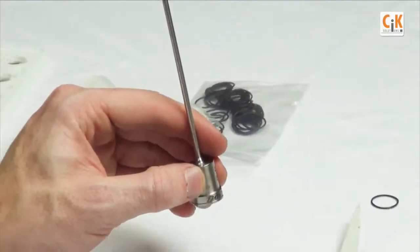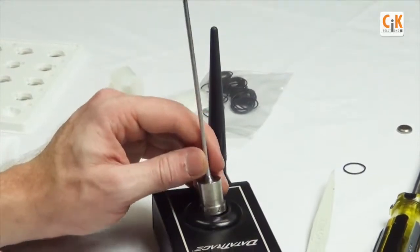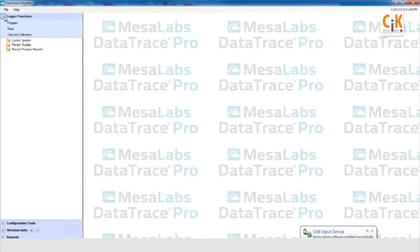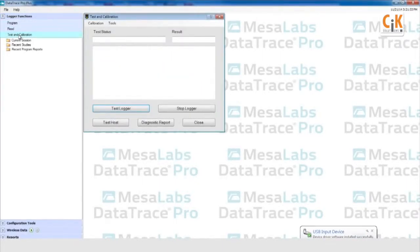Finally, place the logger in the PC interface. In DataTrace Pro, in the test and calibration window, click the new battery button under the tools menu. Follow the on-screen prompts to reset the battery and perform a test logger.